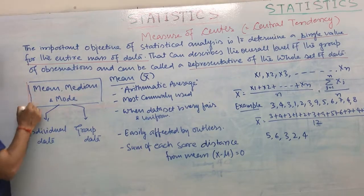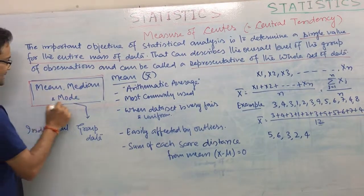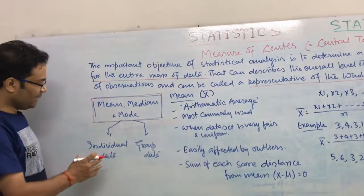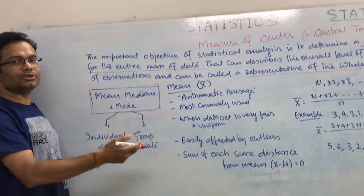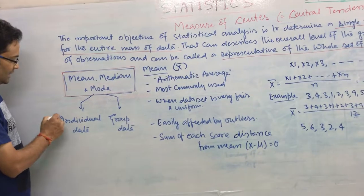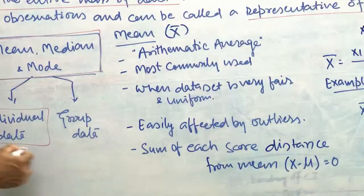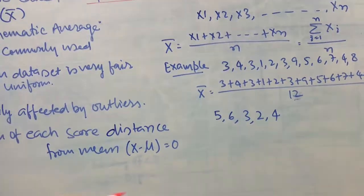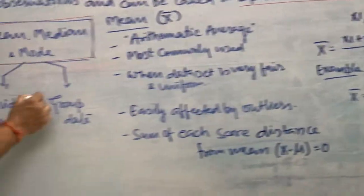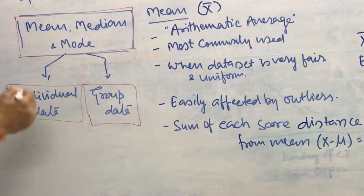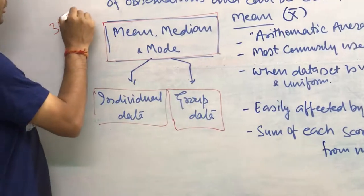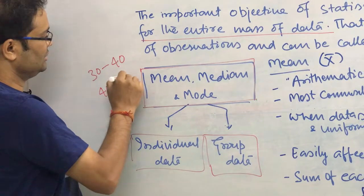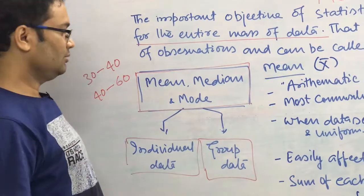As I mentioned, there are three ways to measure central tendency: mean, median, and mode. The calculation will be different depending upon the data. If the data is individual data — for example: 3, 4, 3, 1, 2, 9 — the formula is different. If you have grouped data — meaning ranges like 30 to 40, 40 to 60 — this kind of data is called grouped data.